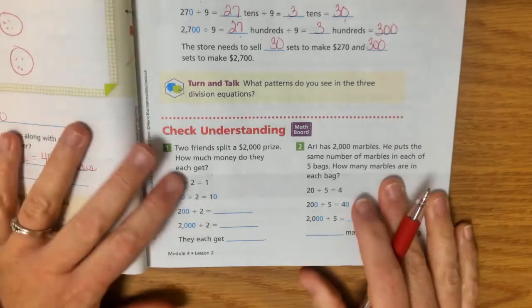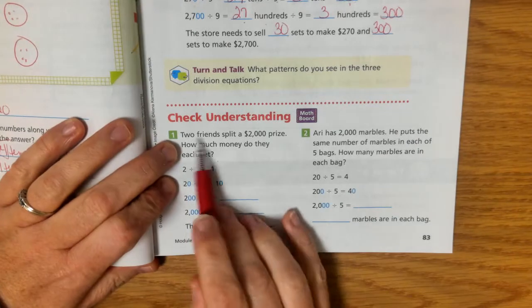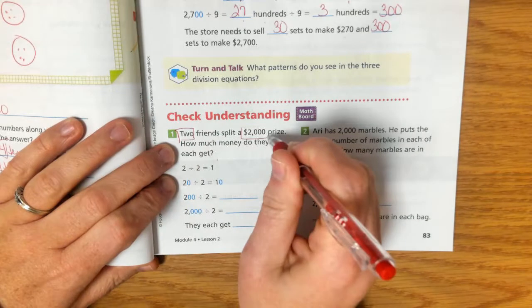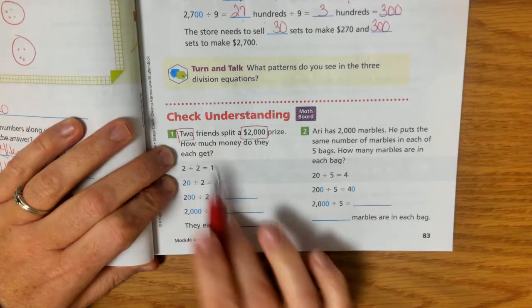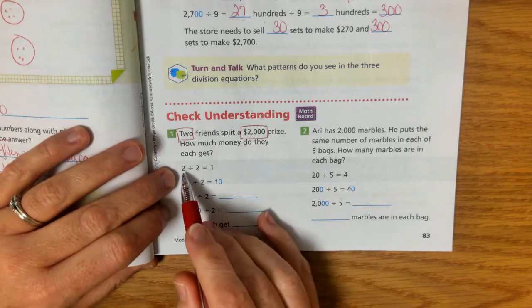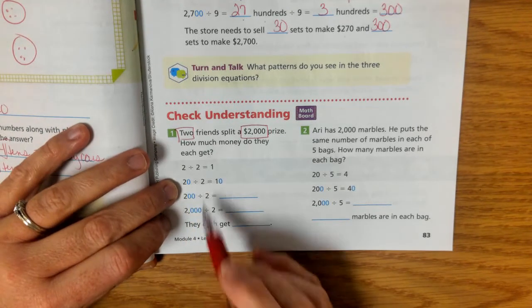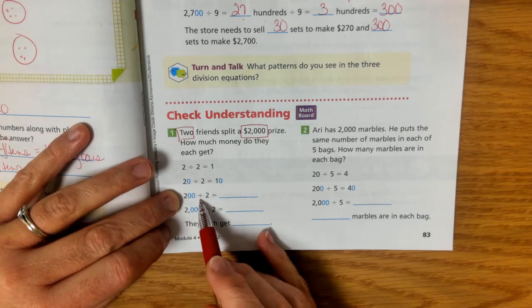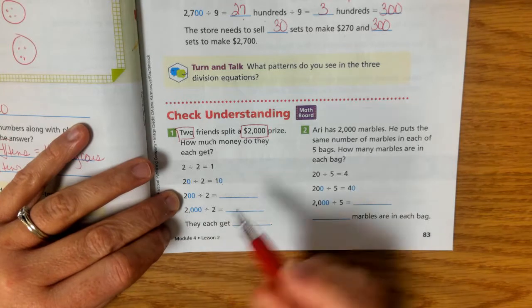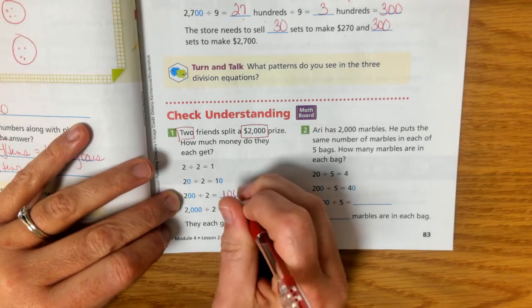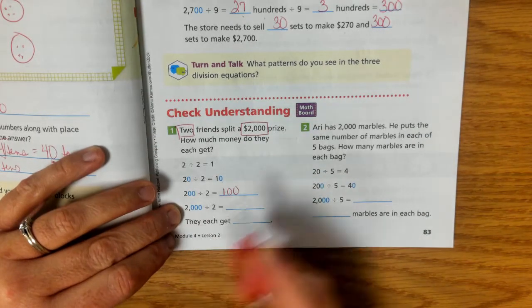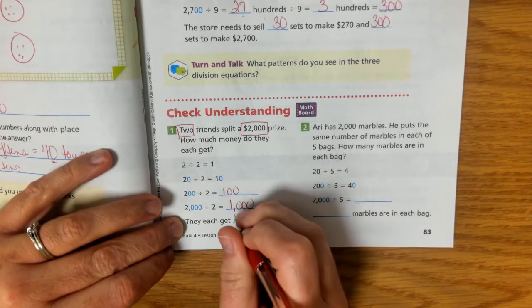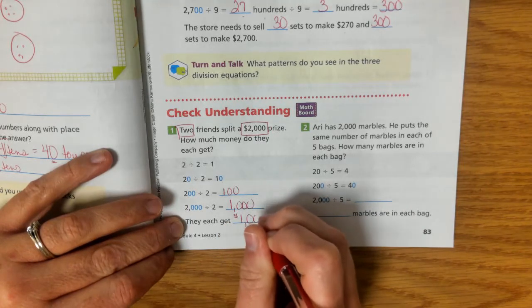All right, so let's do some practicing down here. Two friends split a $2,000 prize. So two friends are splitting $2,000. So how much money does each of them get? Well, our simpler problem is 2 divided by 2. So if we did 20 divided by 2, we would get 10. 200 divided by 2 would be how many zeros? That's 100. 2,000 divided by 2 would be 1,000. So 2,000 divided by 2, they would each get $1,000.